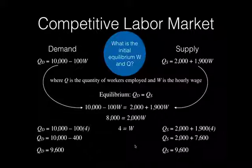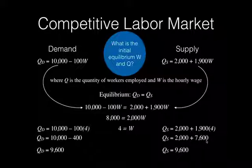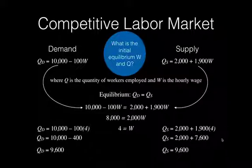QD and QS are both equal to 9,600, so we can be fairly certain that we calculated W correctly. The equilibrium wage rate is 4, and the equilibrium quantity is equal to 9,600.